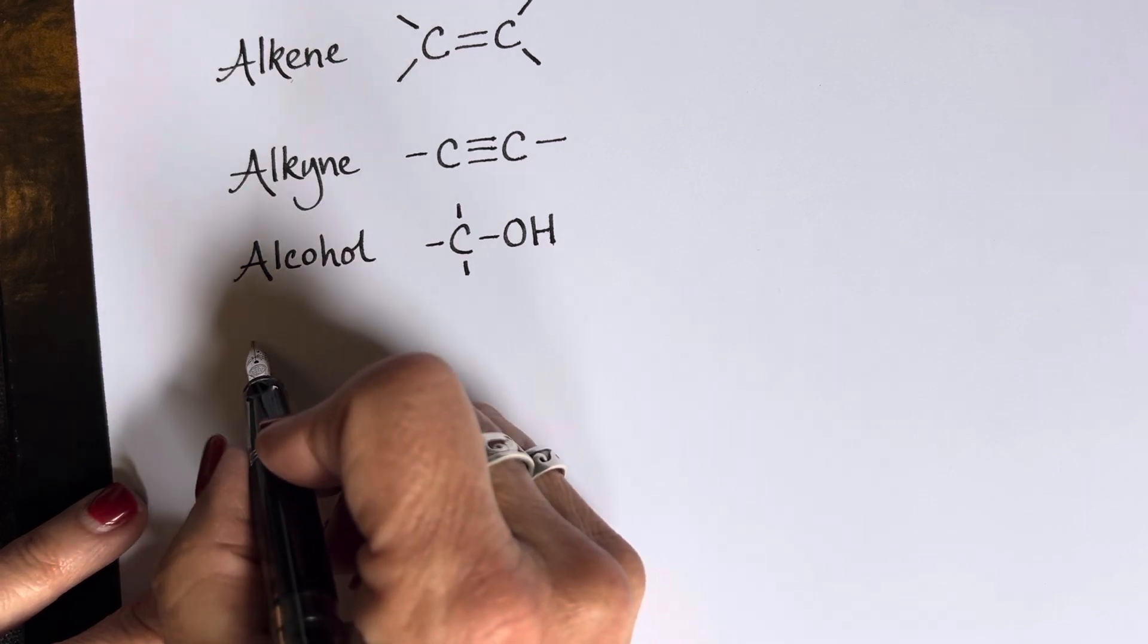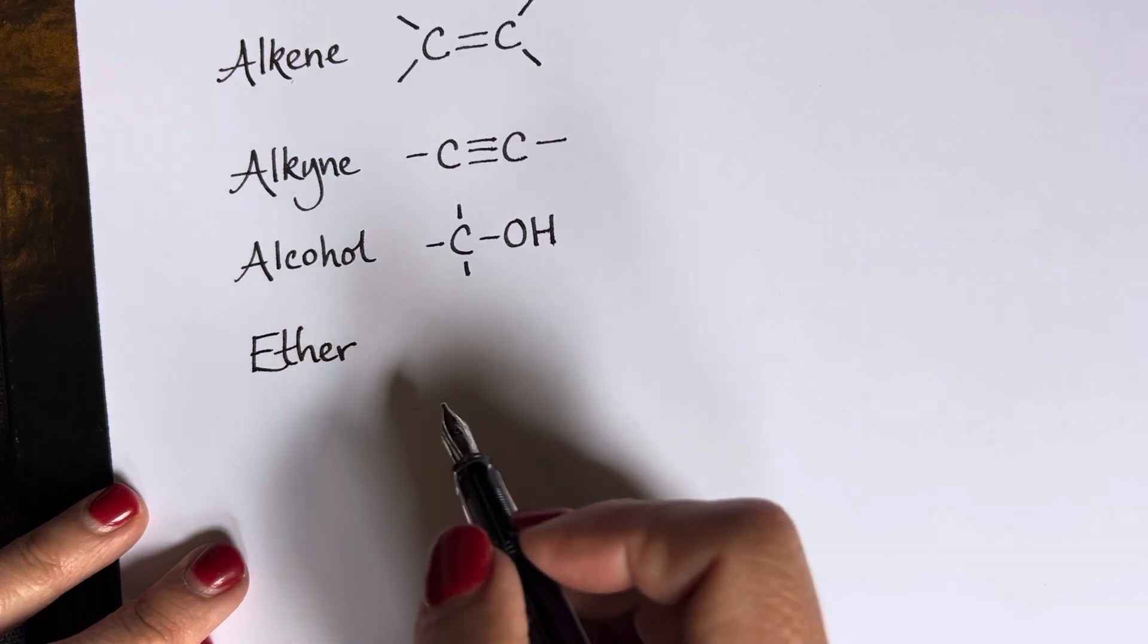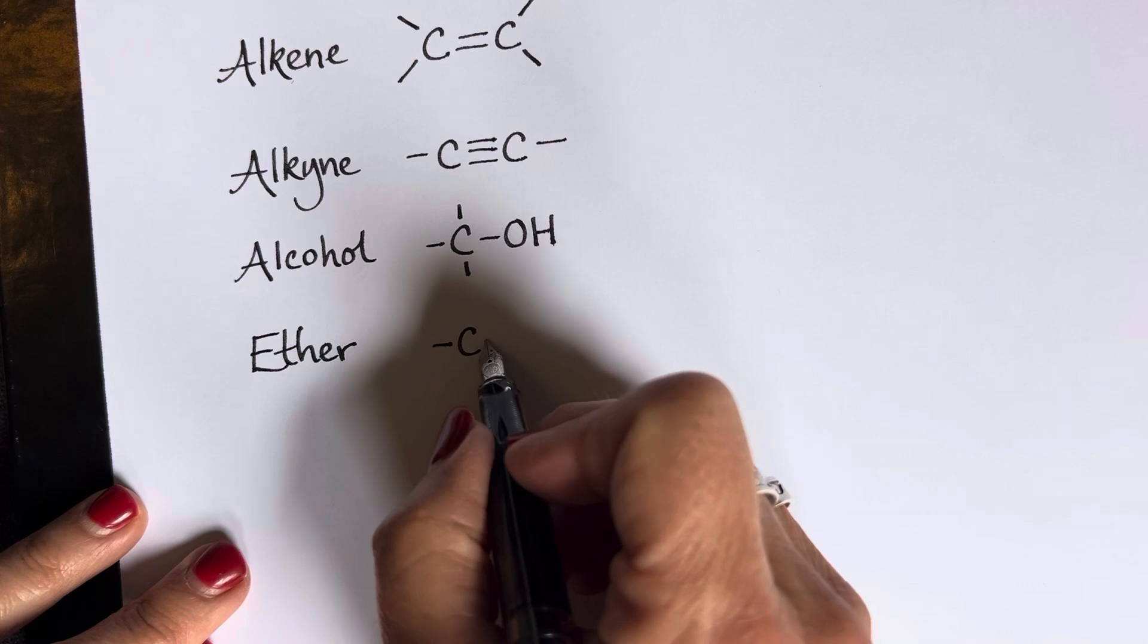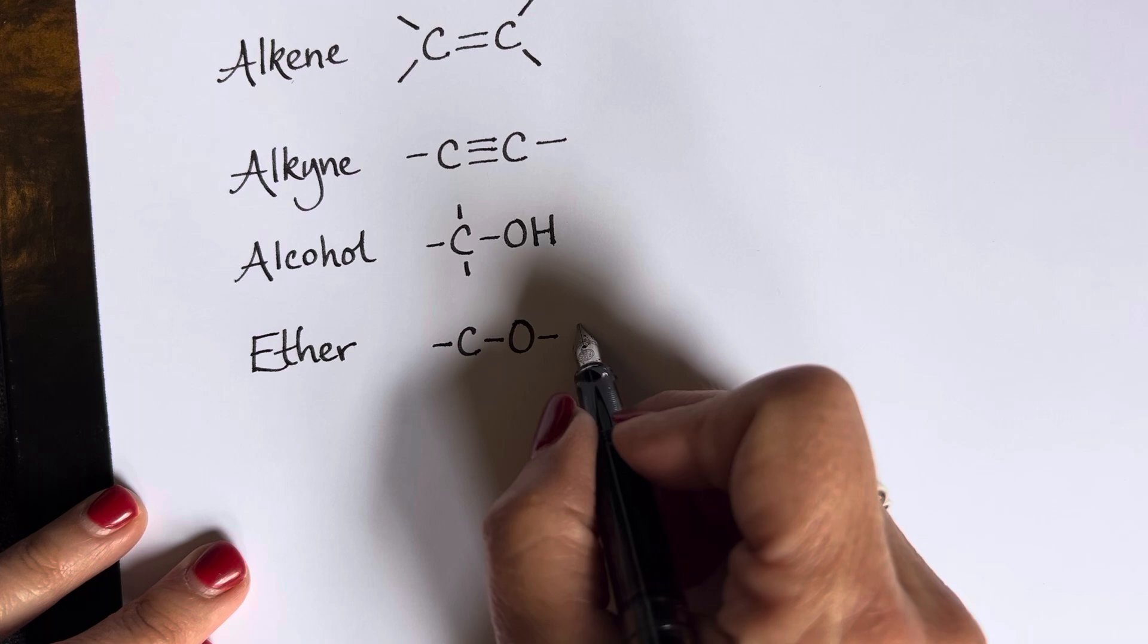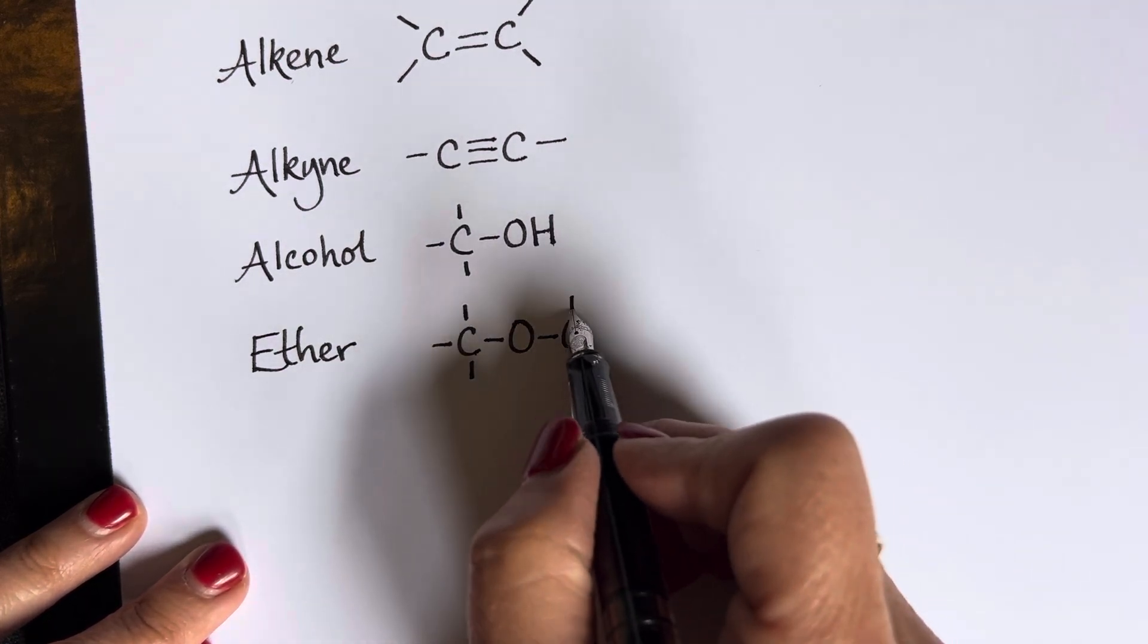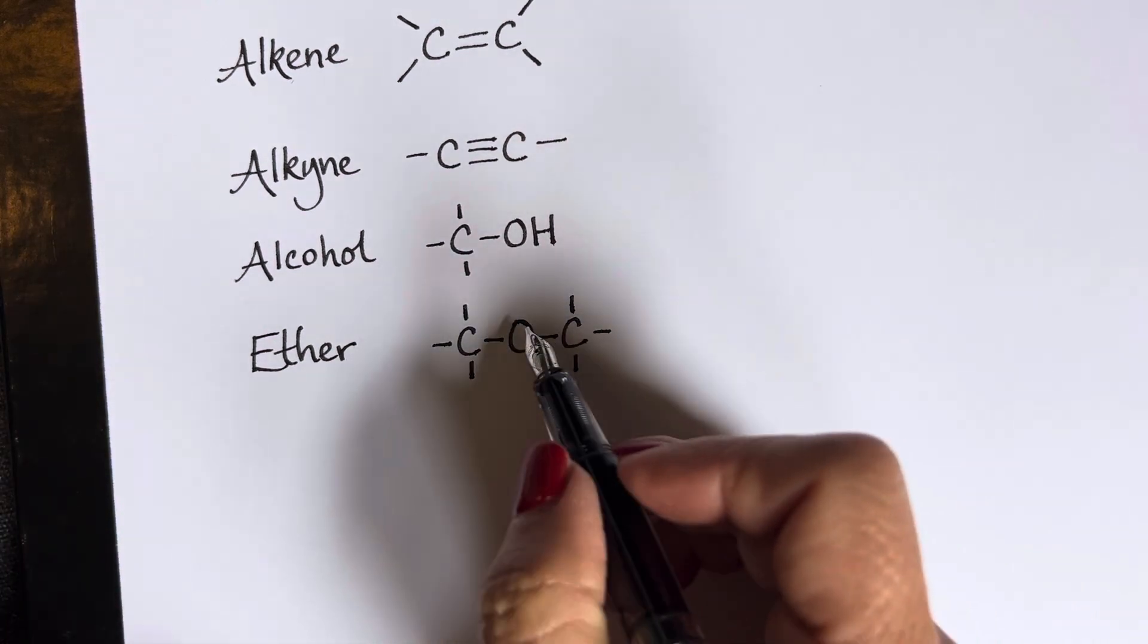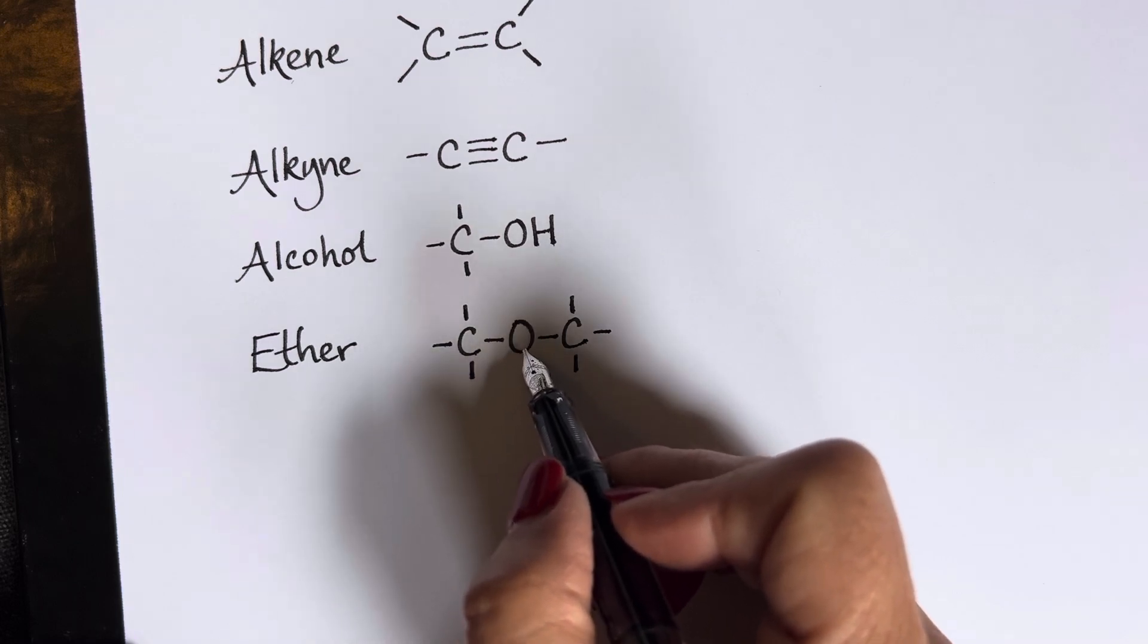How about an ether? Ether, I like to call an oxygen sandwich, because it is oxygen that is bonded to carbon on one side and carbon on the other side. Again, we could include those lone pairs if we wanted to really show that the oxygen had its octet, but often in organic chemistry it's left off.